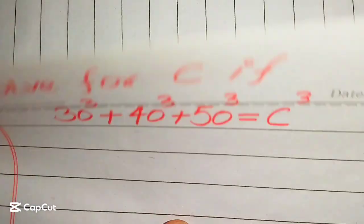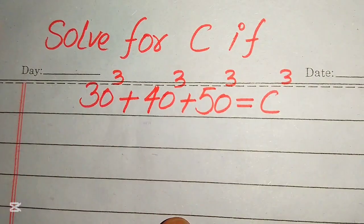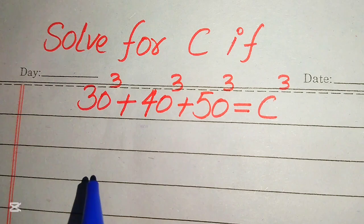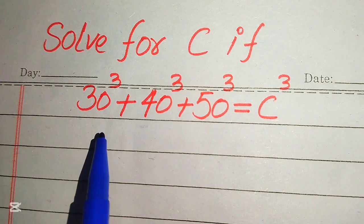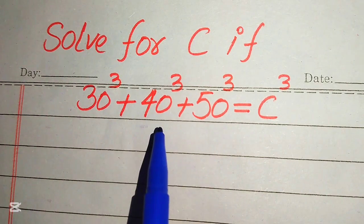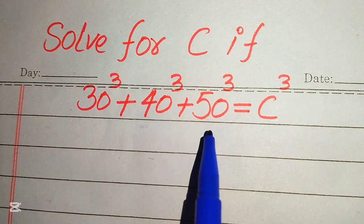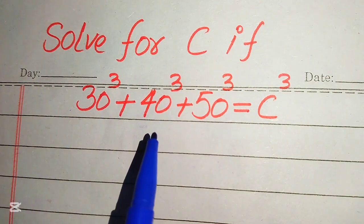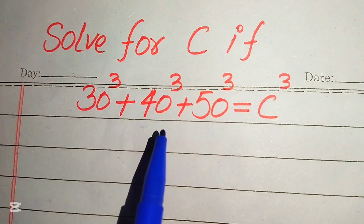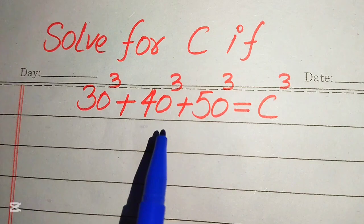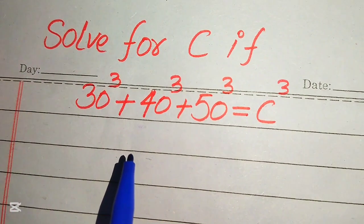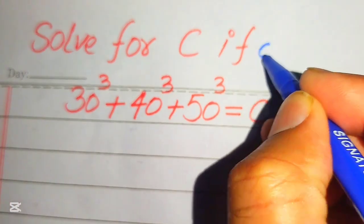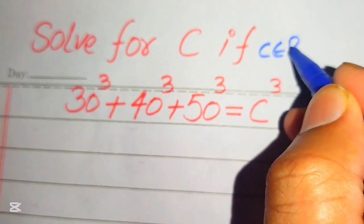Hello everyone! Today I want to show you how to solve this problem for the values of C. If we have 30 cubed plus 40 cubed plus 50 cubed equals C cubed, and we solve this problem for the values of C. Here we need to solve this problem only for real values of C.